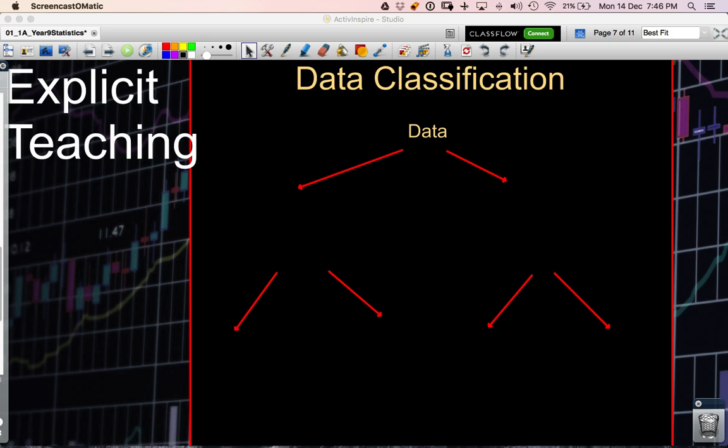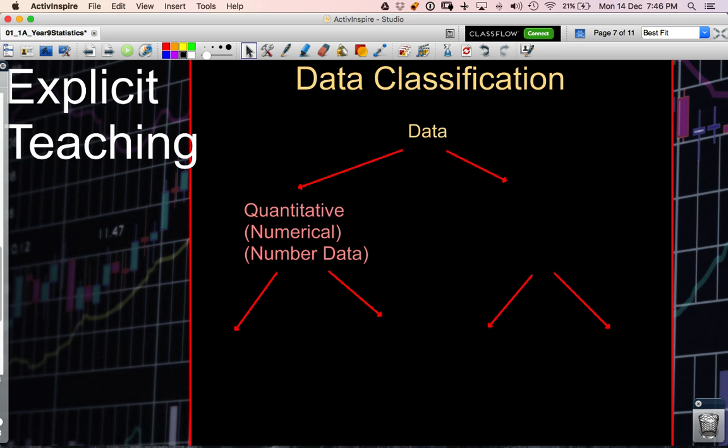Now generally data can be classified as being either quantitative or numerical, data that's associated with numbers, or qualitative which is non-numerical data or data associated with words or categories.